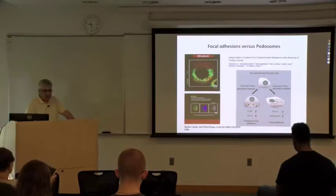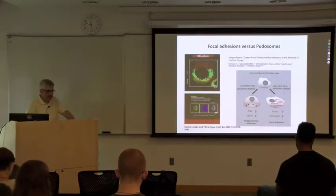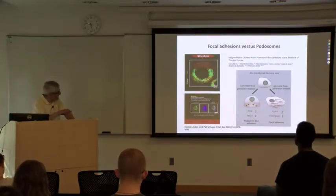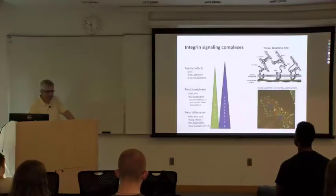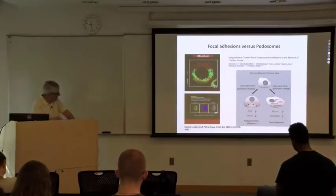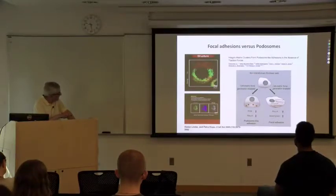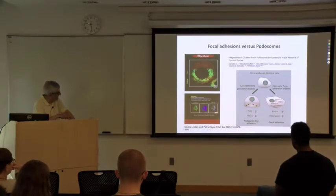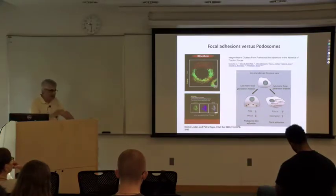There is another adhesion system called a podosome, seen in hematopoietic cells. A podosome has a ring-like structure — green is talin, red is F-actin — and looks very different from a focal adhesion. A well-known mechanobiology lab showed that podosomes and focal adhesions are actually interconvertible in a hematopoietic cell, depending upon the activation of Rho GTPases and force. Not all cells have focal adhesions.